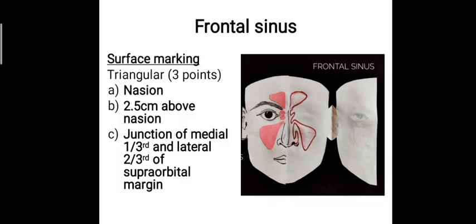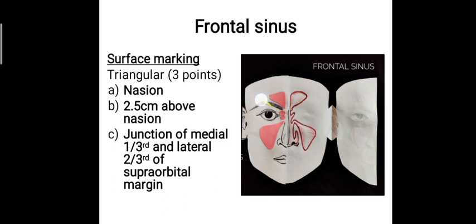The surface marking of the frontal sinus can be done by marking three points. It is a triangular space marked on the face by: first, the nasion — the central point; second, a point 2.5 centimeters above it; and third, the junction of the medial one-third and the lateral two-thirds of the supraorbital margin. Joining these three points draws a triangle that marks the frontal sinus on the forehead.